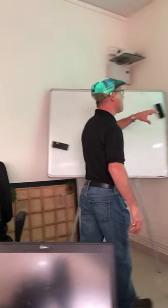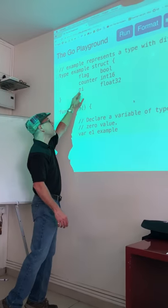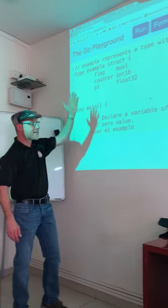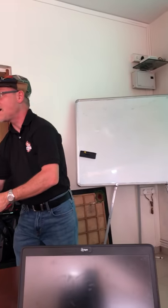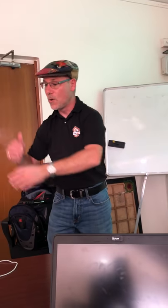We can call it a composite type because it's made up of many different existing types — bool, int16, float32. Nothing novel here.